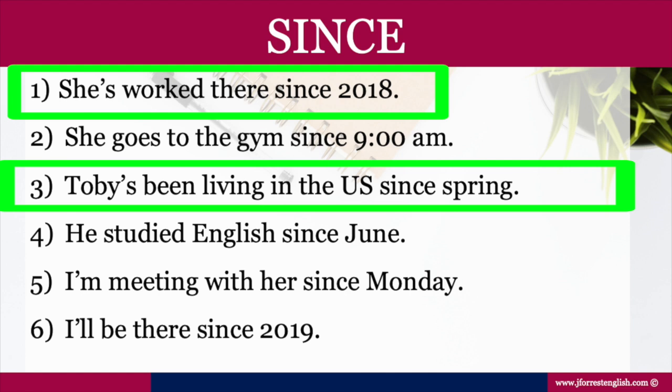You can use 'since' with the present perfect and the present perfect continuous. The reason why is because 'since' is used for an action that started in the past but continues until now, and we actually don't know when that action is going to end. It started in the past, continues until now, and is still in progress — that's when we can use 'since'.